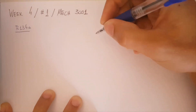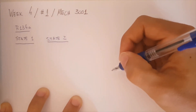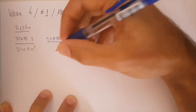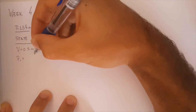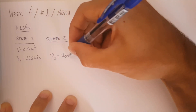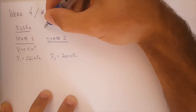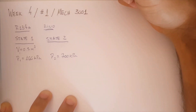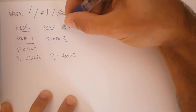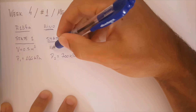First things first, make sure that we always write what we're dealing with so we don't look at the wrong tables. We have two states as per usual — state 1 and state 2. On state 1, I know the volume, which has been given, and also the pressure: P1 is 160 kilopascals. And on state 2, the pressure is 700 kilopascals. And we have that special word: rigid. Whenever that word pops up, we know there's no ΔV — no change in volume — so V2 is equal to V1.